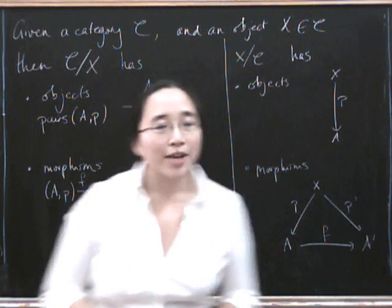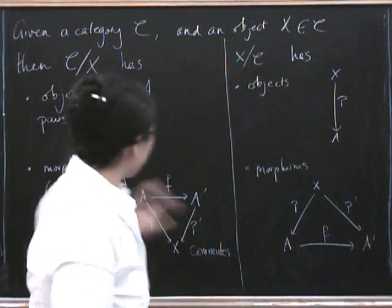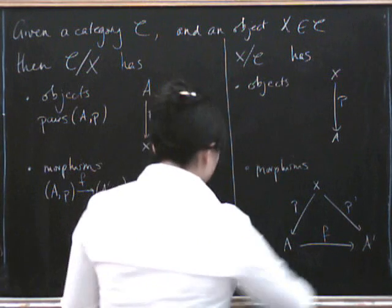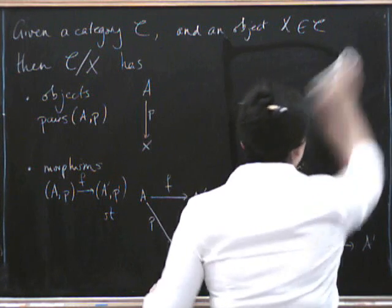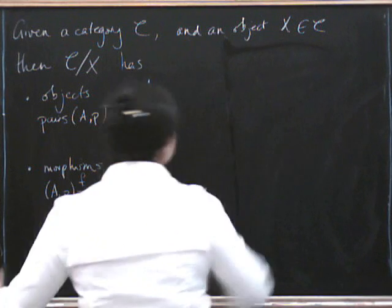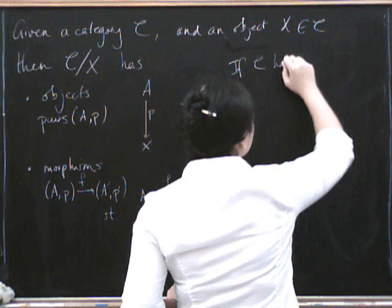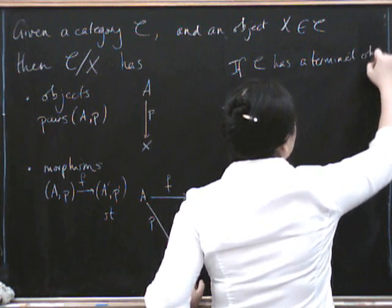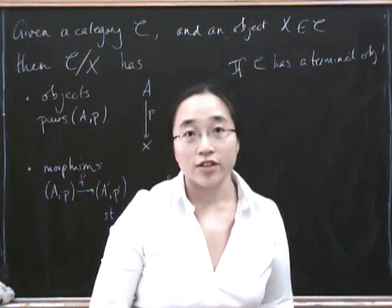So why am I telling you about this? Well, one of the things I felt like saying was talking about products in this category. So let's just take this part of the definition. Actually, you know what? Before I say that, I should point something out, which is that if C has a terminal object, then if you slice yourself over your terminal object, nothing's going to happen, right?